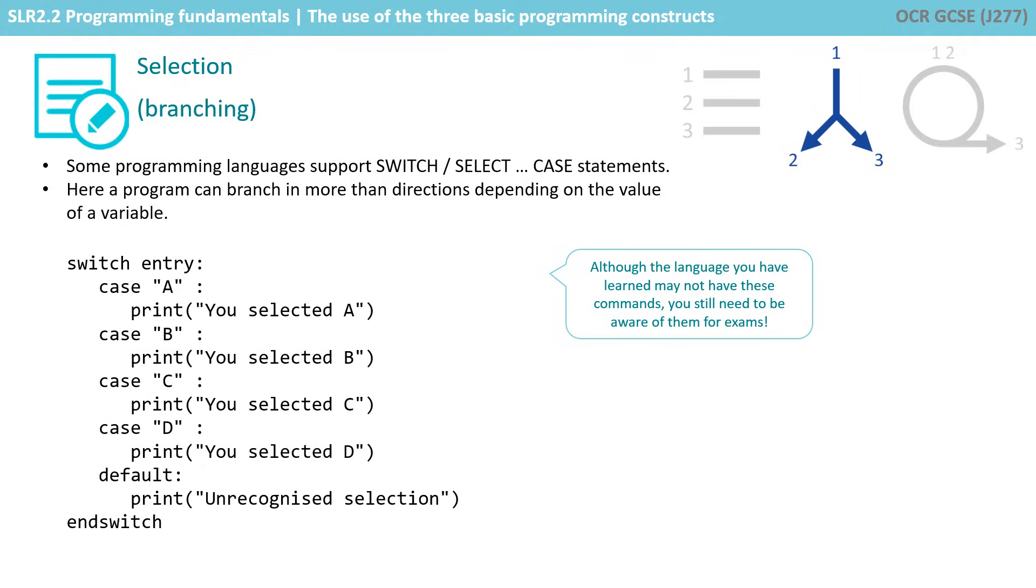If entry didn't hold a capital A, it would go down to the next case statement, which is a capital B, and say, well, does entry contain a capital B? If it does, it would execute the code under that case statement.